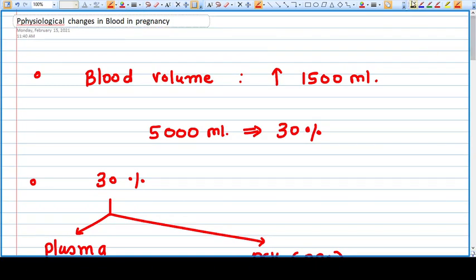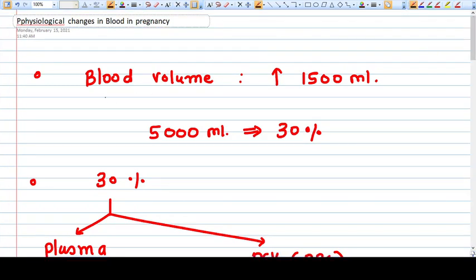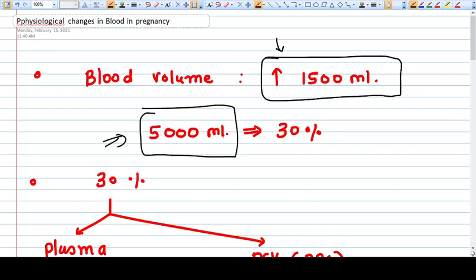Okay, so let's start. The blood volume increases during pregnancy is 1500 ml, around 1500 ml. So if we take 5000 ml as a total blood volume in our body, then it will be increased 30 percent.